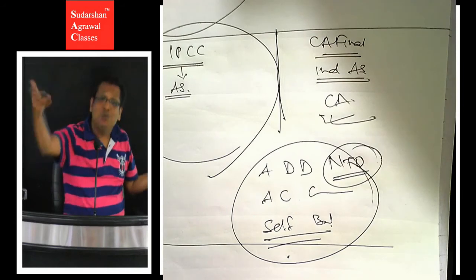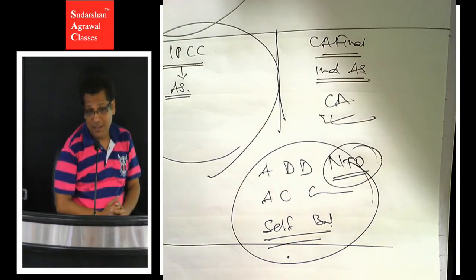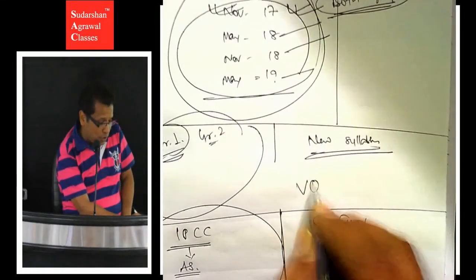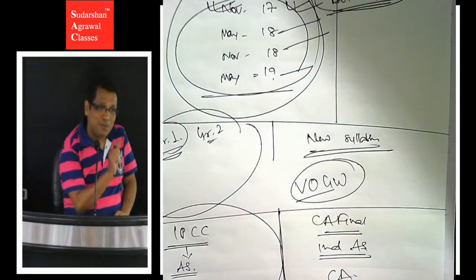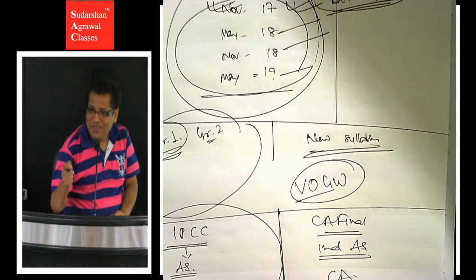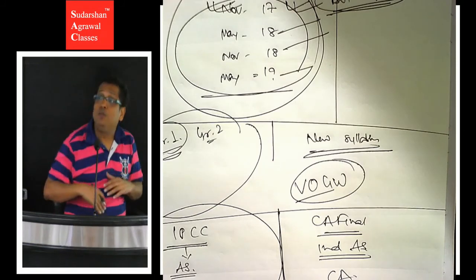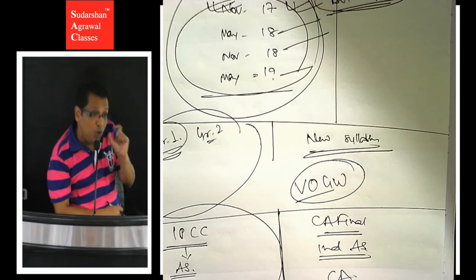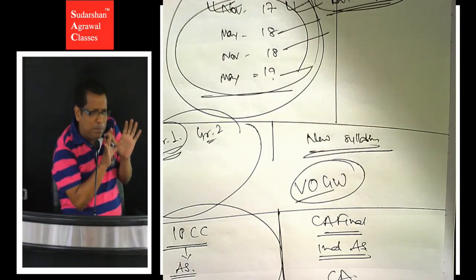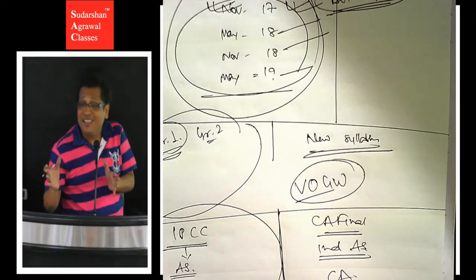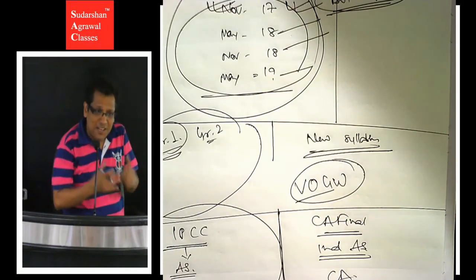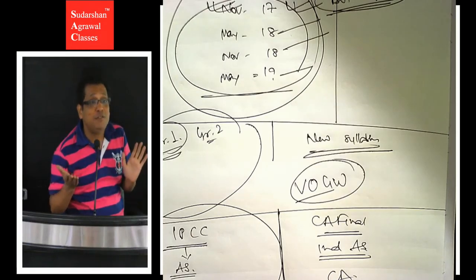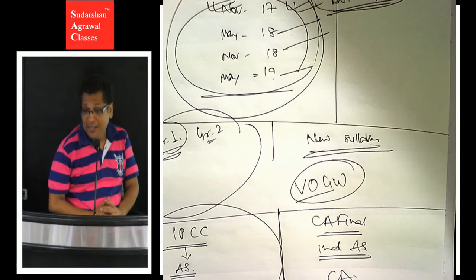The big additions are valuation of goodwill chapter - you remember when I was studying goodwill in partnership, I said this is a CA final chapter. That chapter has come into IPCC. And consolidation - means holding company, a preliminary version consolidation, holding and subsidiary preliminary version has been added to IPCC group 2. So group 2 now has corporate accounting with two new additional chapters: holding companies and valuation of goodwill.